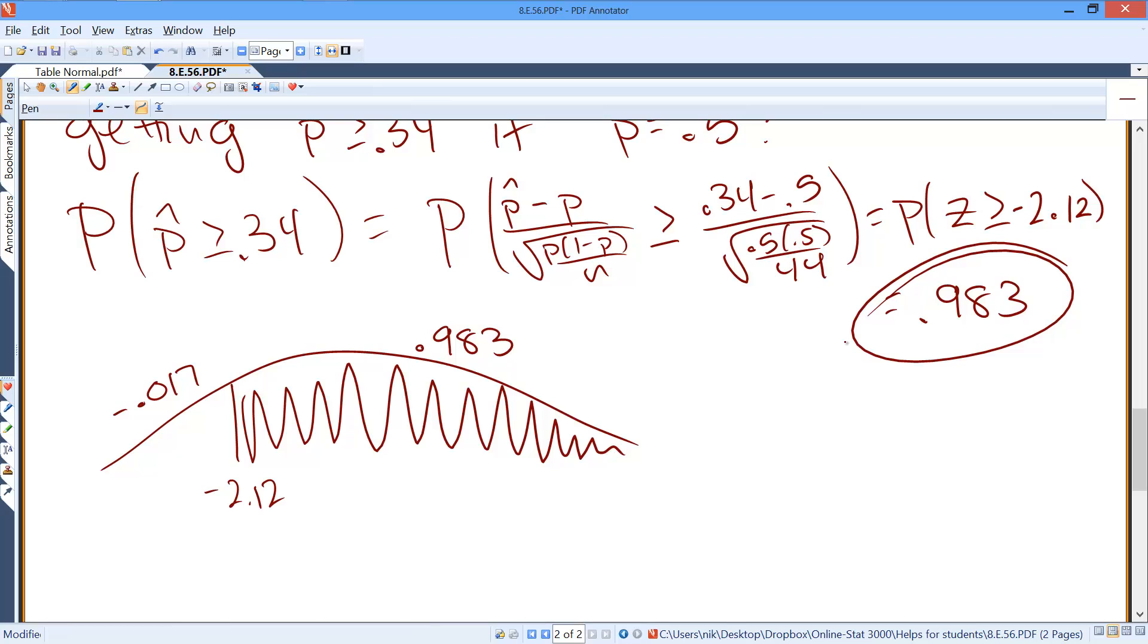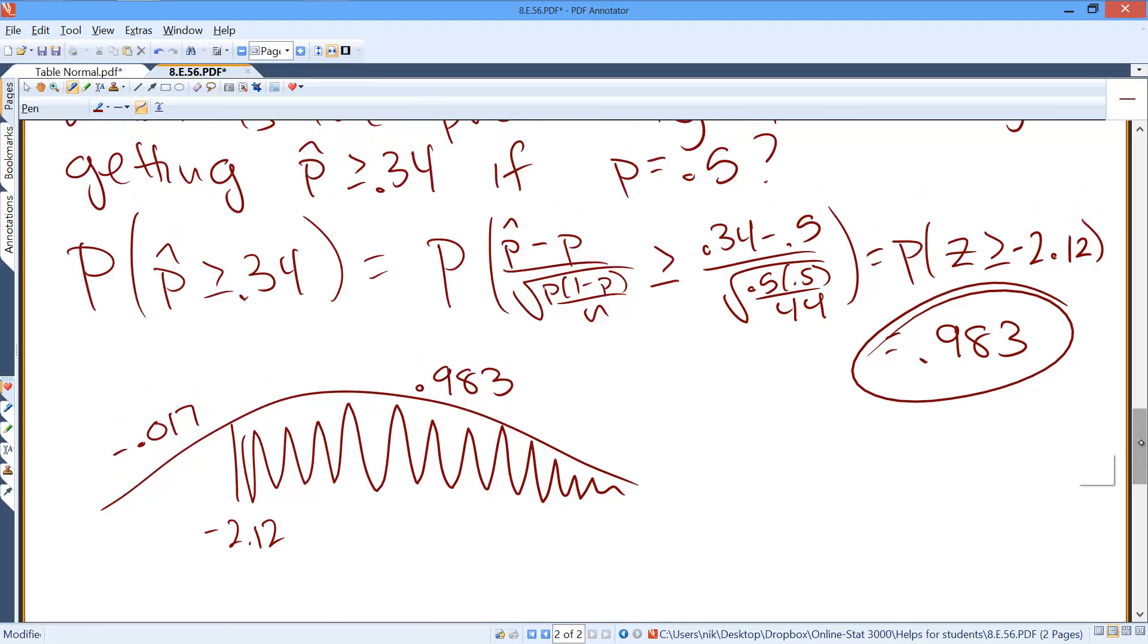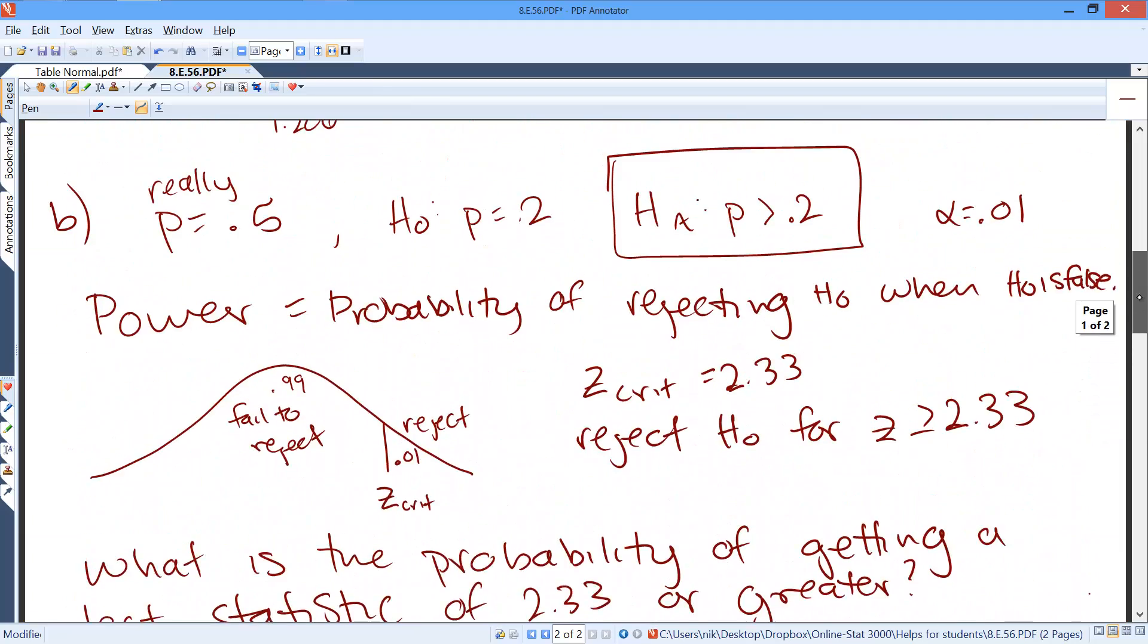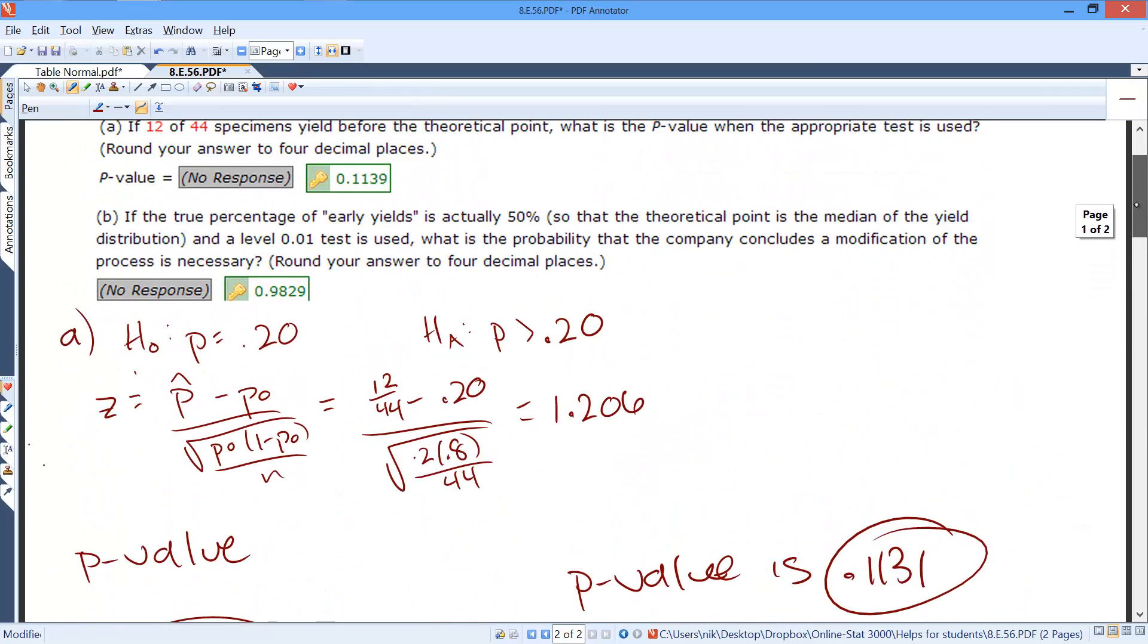So our power, the probability of rejecting the null hypothesis where we know our population proportion really is 0.5, is 98.3%, which is really high. And that is a good thing. Power is a good thing. We want to reject our false null hypothesis.